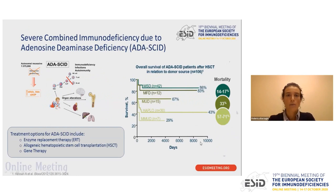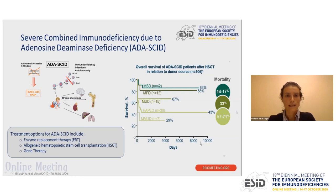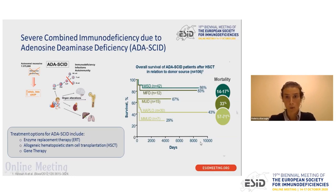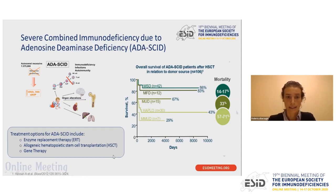Severe combined immune deficiency due to adenosine deaminase deficiency is a form of autosomal recessive SCID due to mutations in adenosine deaminase. Dysfunction of this enzyme determines accumulation of toxic metabolites which impair the survival of immune cells, causing recurrent and severe infections due to immune deficiency, but also metabolic alterations involving the liver, kidney, bone, and brain. Patients present with sensorineural deafness and sometimes cerebral alterations. Treatment options for ADA-SCID include enzyme replacement therapy, allogeneic hematopoietic stem cell transplantation, and gene therapy.